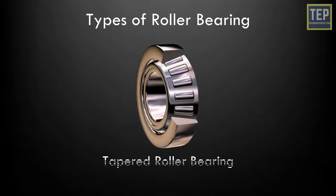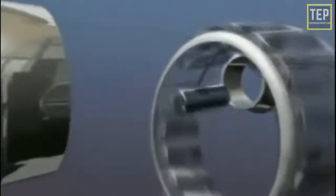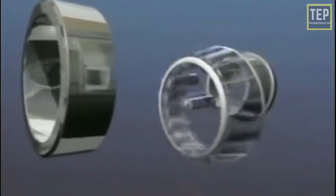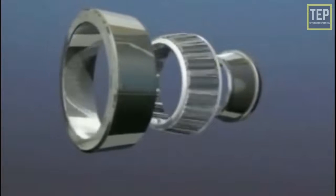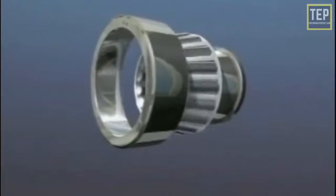Tapered roller bearings contain sections of a cone as a load carrying element. These rollers fit between the two races that are also sections of a hollow cone. If the races and the axes of rollers were extended, they would all meet at a common point. Tapered roller bearings are designed to handle higher axial loads besides radial loads.